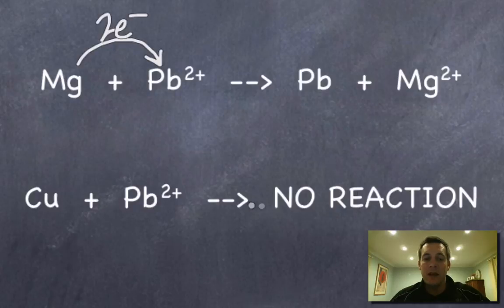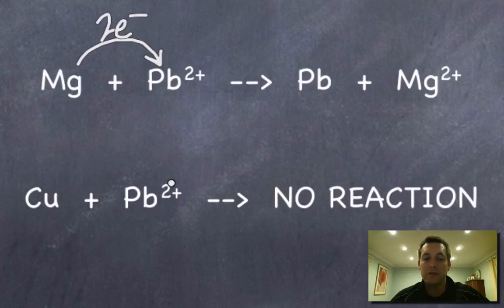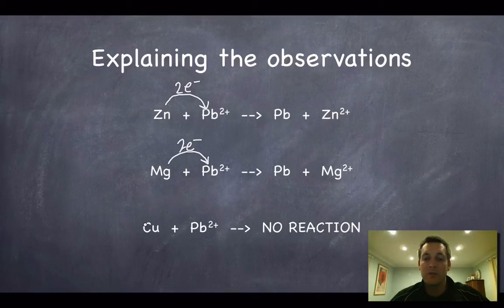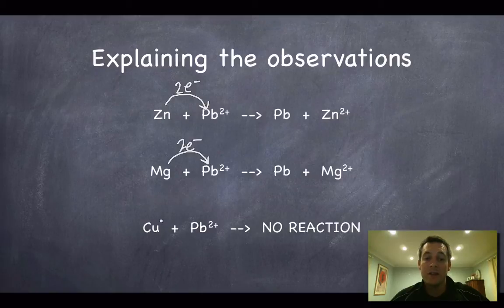In the copper test tube there was no reaction, which means lead must be a better reducing agent than copper — copper can't reduce lead. Copper was not able to give away its electrons to the lead ions, so it wasn't a good enough reducing agent. Alternatively, you could say that lead is not a good enough oxidizing agent to oxidize copper, or that copper is a better oxidizing agent than lead.